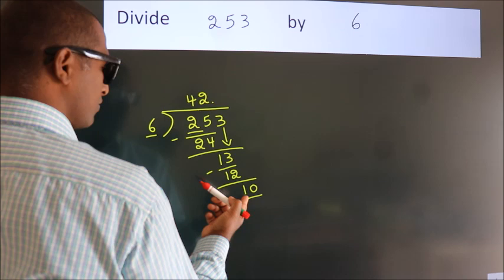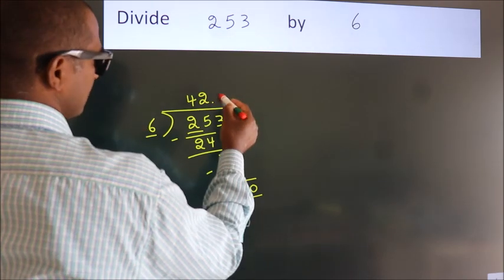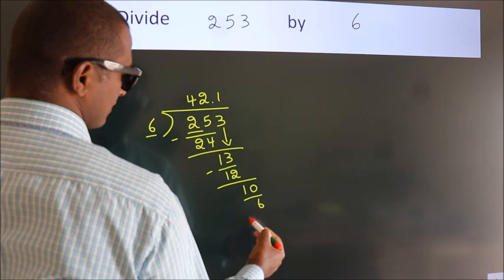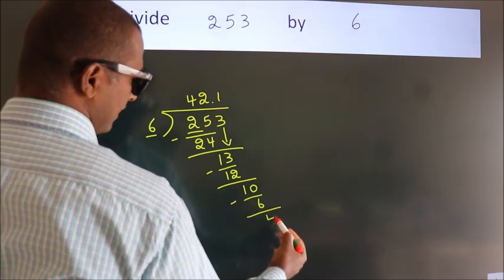A number close to 10 in the 6 times table is 6 times 1, which is 6. Now, we subtract. We get 4.